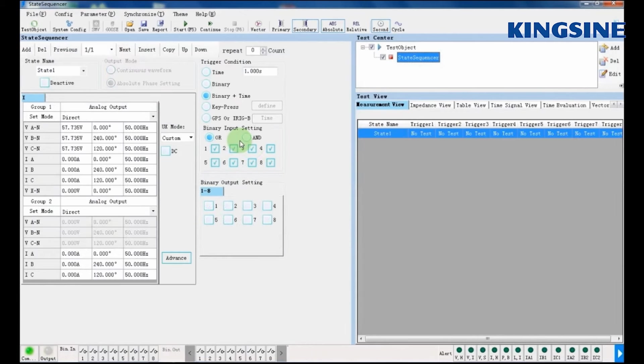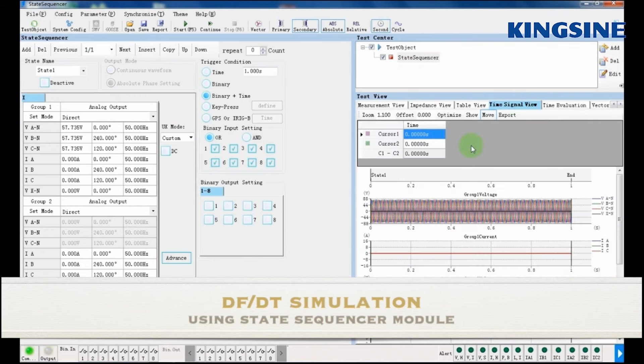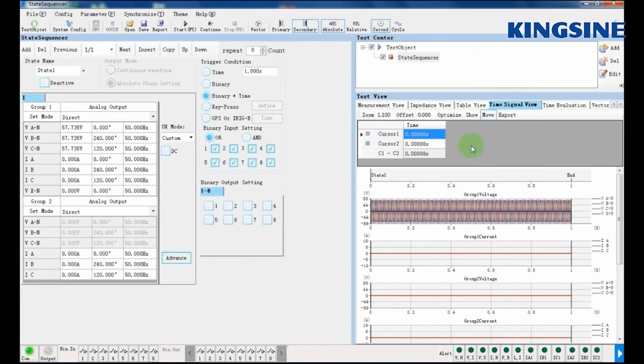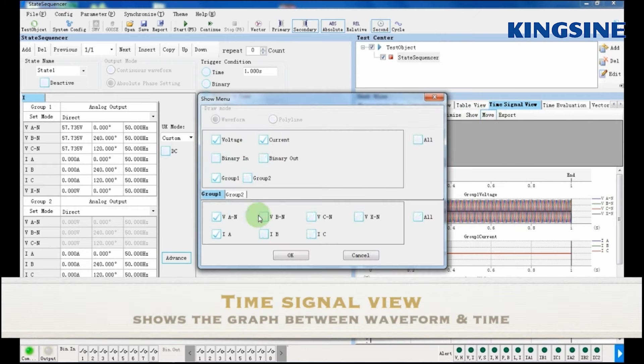Now we are simulating the DF by DT signal in state sequencer mode of KRT software. First, we are entering in time signal view and selecting the signals for which we want to observe the waveform. We have selected a voltage and current signal.